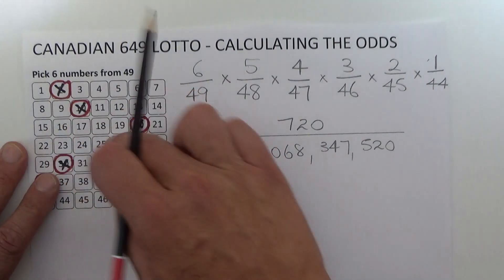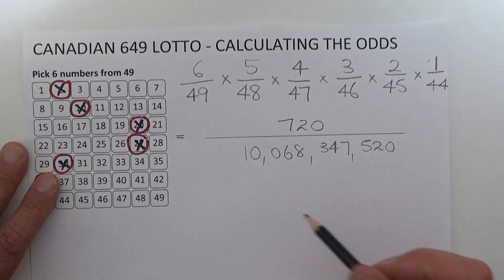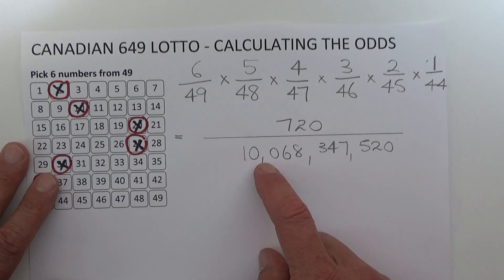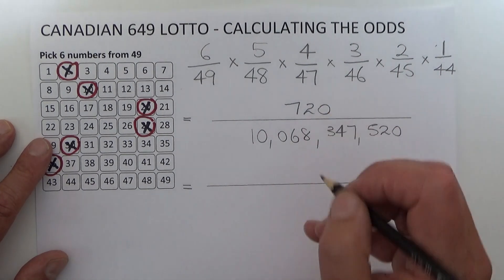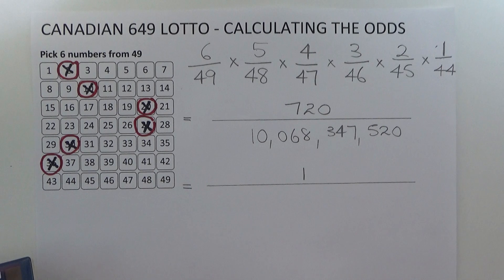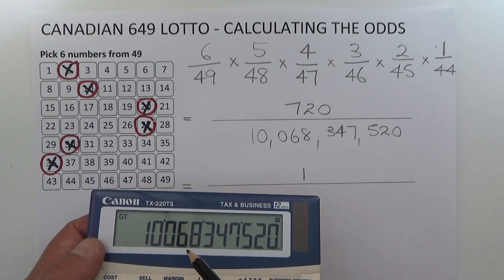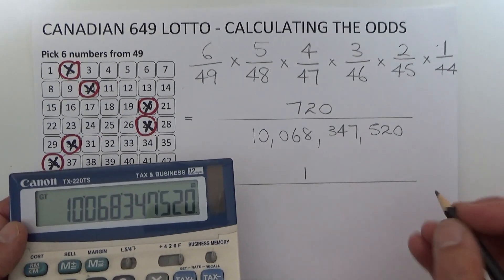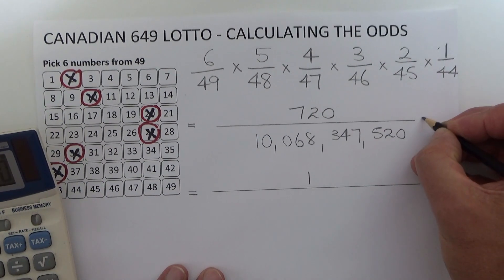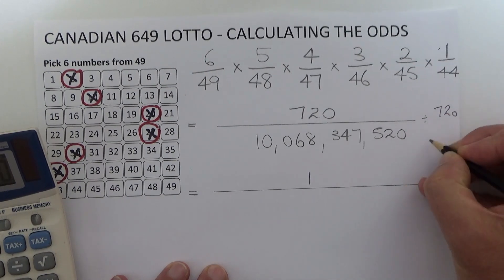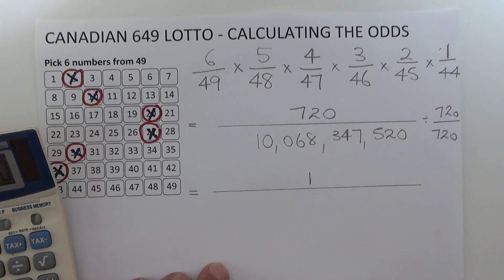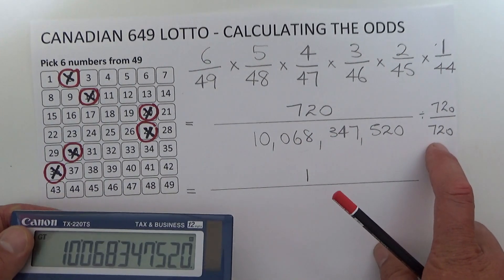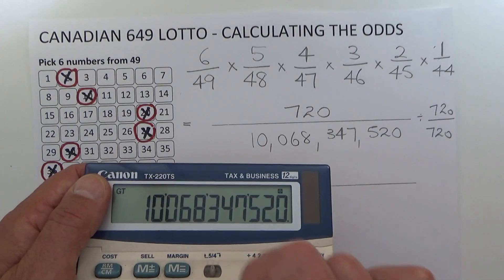Therefore, the odds of matching six numbers from 49 and winning Canadian Lotto are 720 chances in 10 billion odd. To simplify that to one chance in something, we take the 10 billion number and divide it by 720, which is dividing each side of the fraction by 720. Obviously 720 divided by 720 is one.